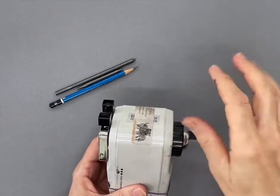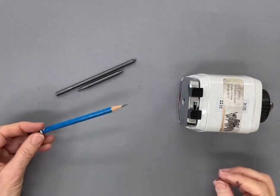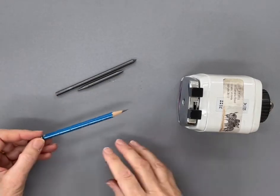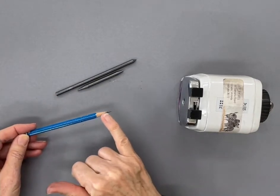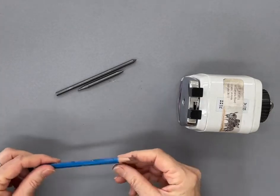But a quicker way is to run a graphite pencil through, because graphite in its pure form is a lubricant and it helps clean and polish up the blades a bit.